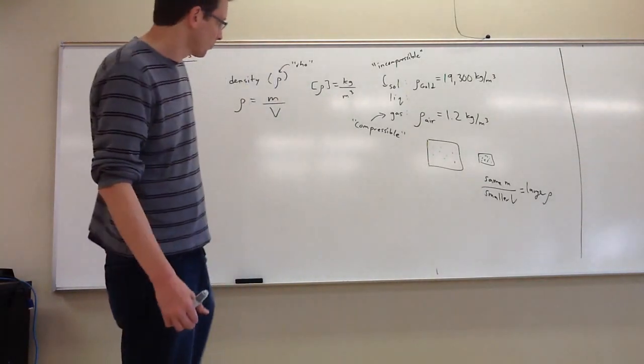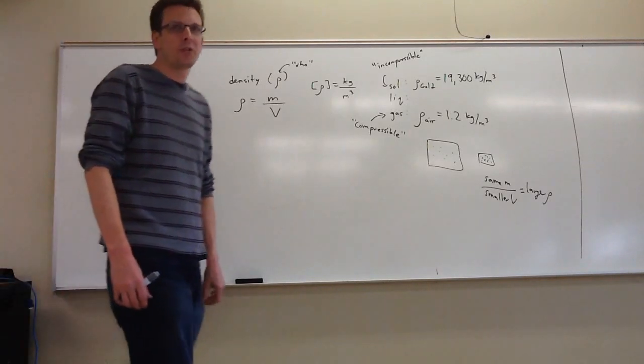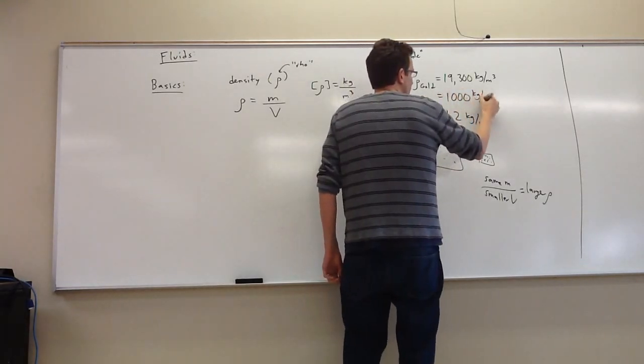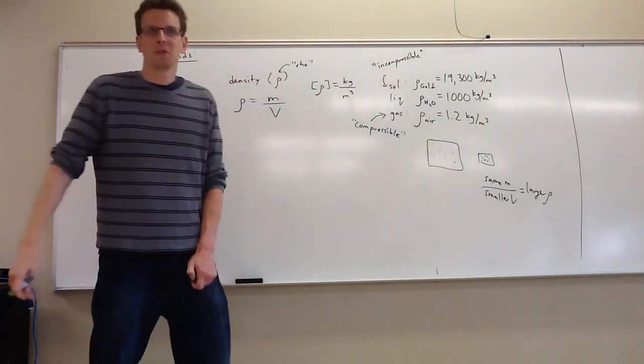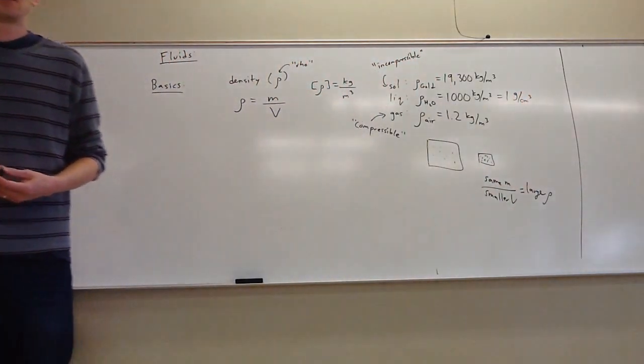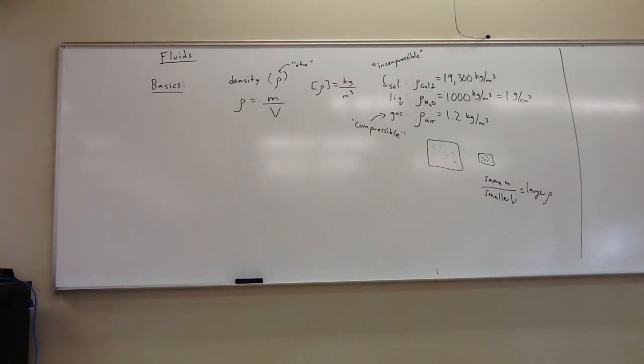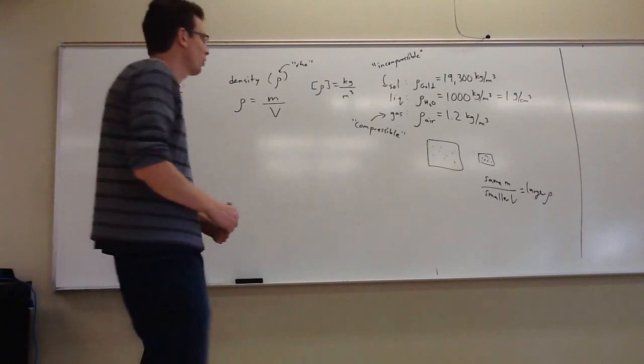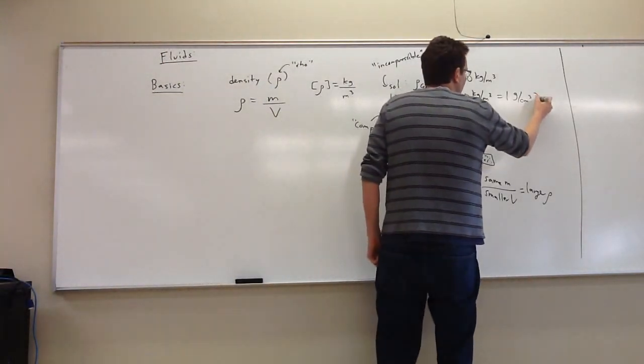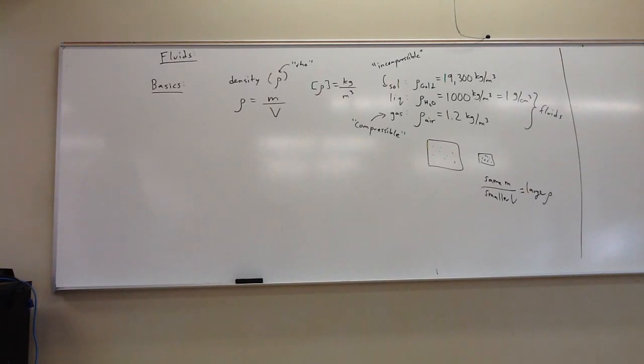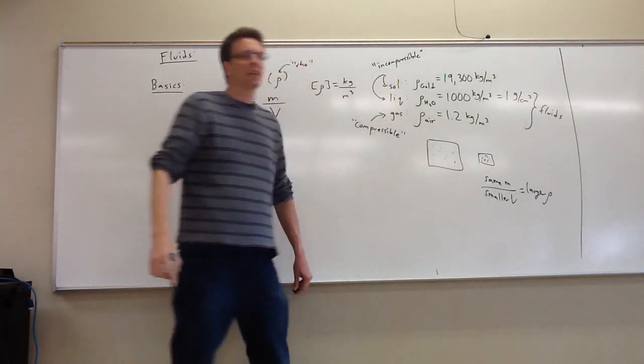You can't take a gold bar and smoosh it into a smaller space, at least not with your bare hands. You need an extremely powerful compactor to even change its volume by the tiniest percent. To a large degree of approximation, we call solids incompressible. Their density is not negotiable. Now liquids, in a certain sense, have a foot in both camps.